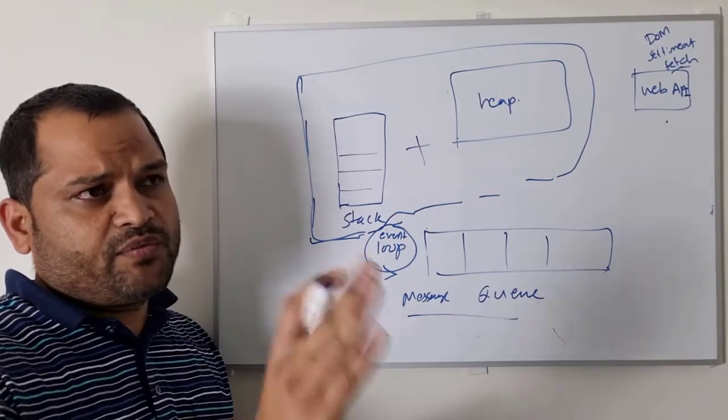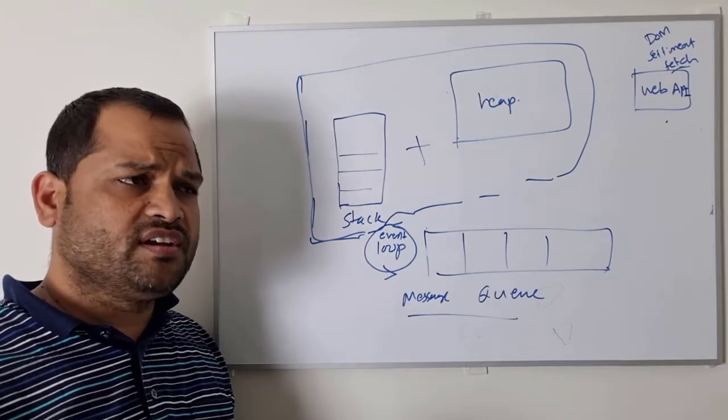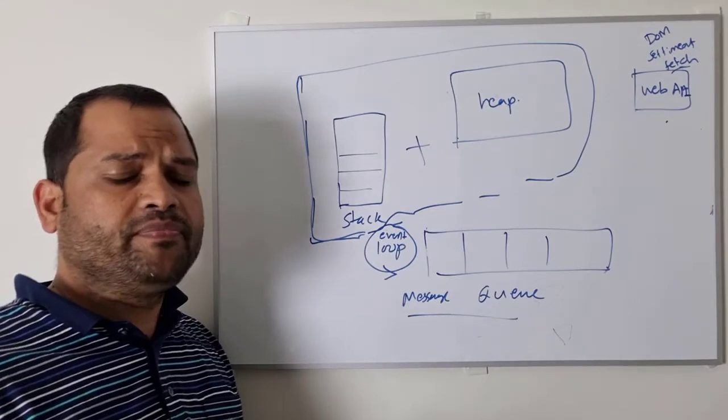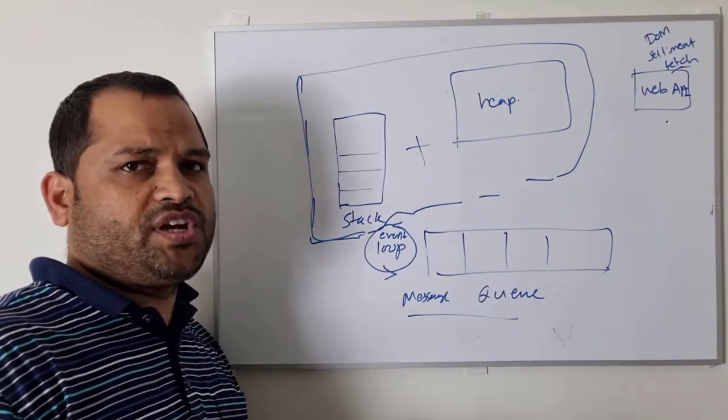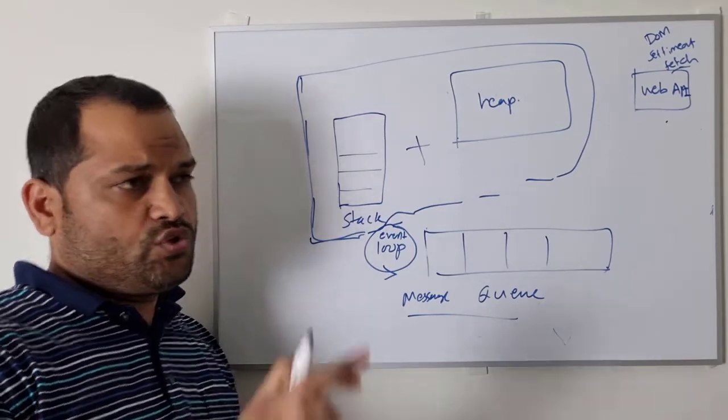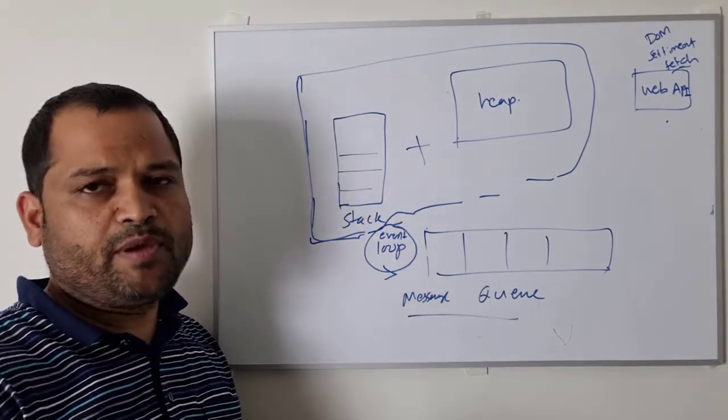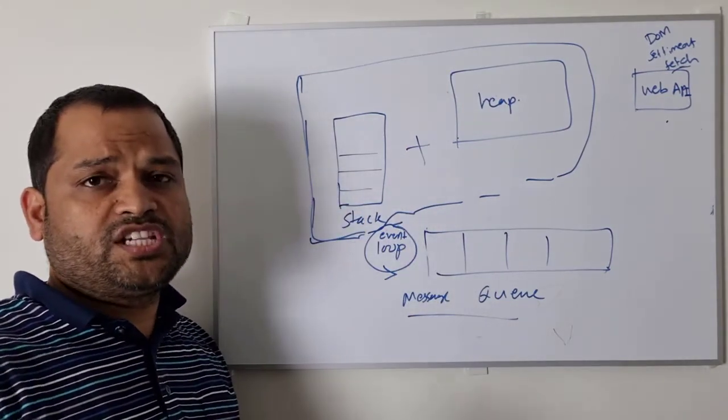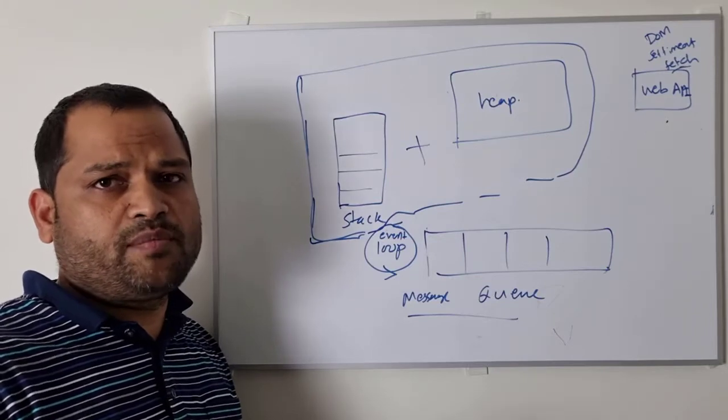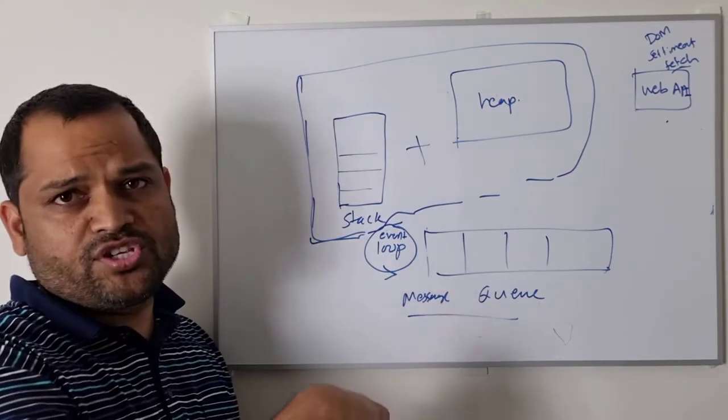So let's say a browser is making a request to the server to get some data and server is very busy. So it is not responding, it is getting too many requests and that's why it is not able to respond immediately. So let's say it is taking one minute to respond to the request. So during that one minute, we don't want to hold the execution of the JavaScript. There may be a lot of other instructions that JavaScript runtime needs to execute. So we don't want to block the execution of those particular instructions.